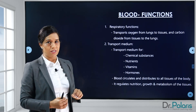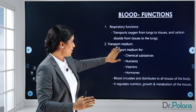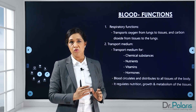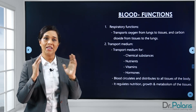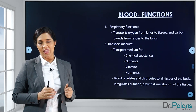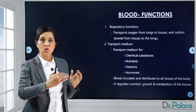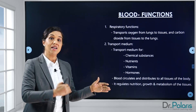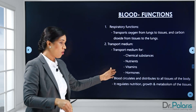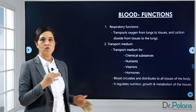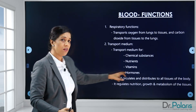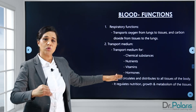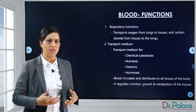The second function is the transport medium. Looking at a big view, it is a transport medium for chemical substances, nutrients, vitamins, and hormones. Endocrine glands release hormones which are poured into the blood, and the blood takes these hormones all over the body through the circulation, delivering them to the target tissue where they need to act. Target organs have receptors on them where the hormones bind and bring about their action. Hormones are transported either free or in combination with carrier proteins such as plasma proteins.